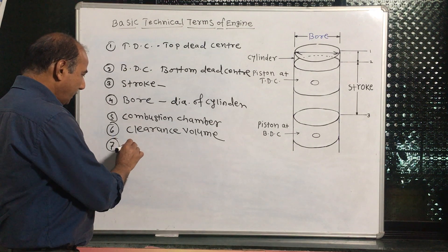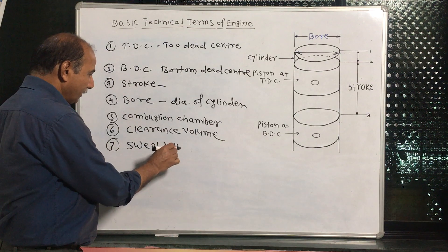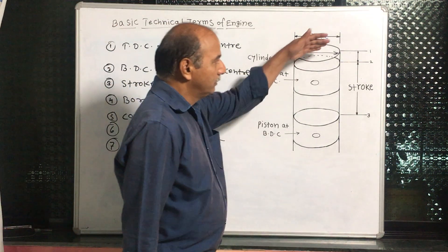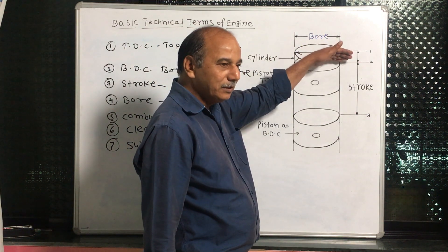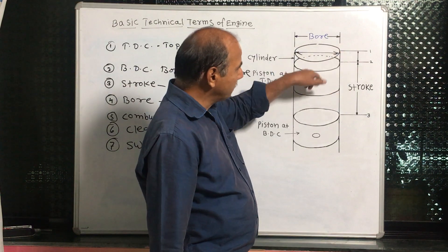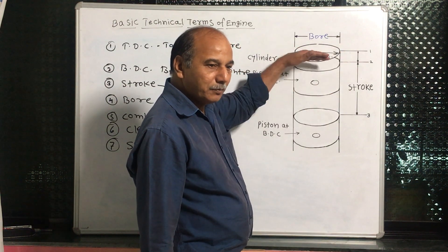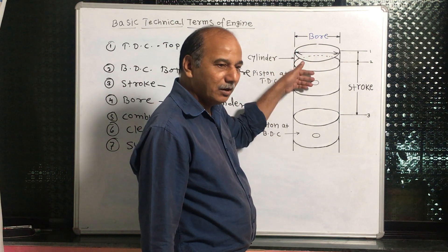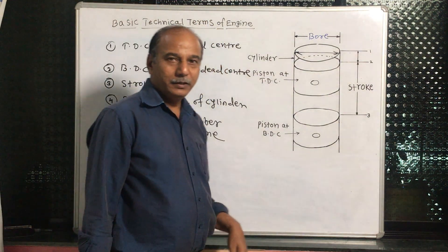Next point is 7, the swept volume. Swept volume means what? That we have to know. See, piston moves from TDC to BDC or BDC to TDC, that is a stroke. In this stroke, in this volume, piston moves from TDC to BDC in cylinder. That is called the swept volume.